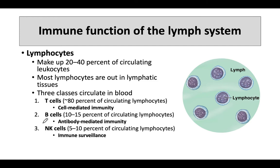Then we have natural killer cells, which technically speaking are a type of T cell, but they're different enough that we put them in their own category. These are actually part of the innate immune system, while T and B cells are part of what we call the acquired immune system. Take a look at the numbers — T cells vastly outnumber the B cells and the natural killer cells. NK stands for natural killer cells, and they are quite deadly and effective.